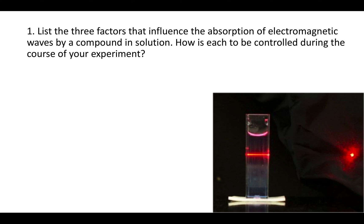Here's some help with the experiment 3 pre-lab. The first question says list the three factors that influence the absorption of electromagnetic waves by a compound in solution. How is each to be controlled during the course of your experiment?